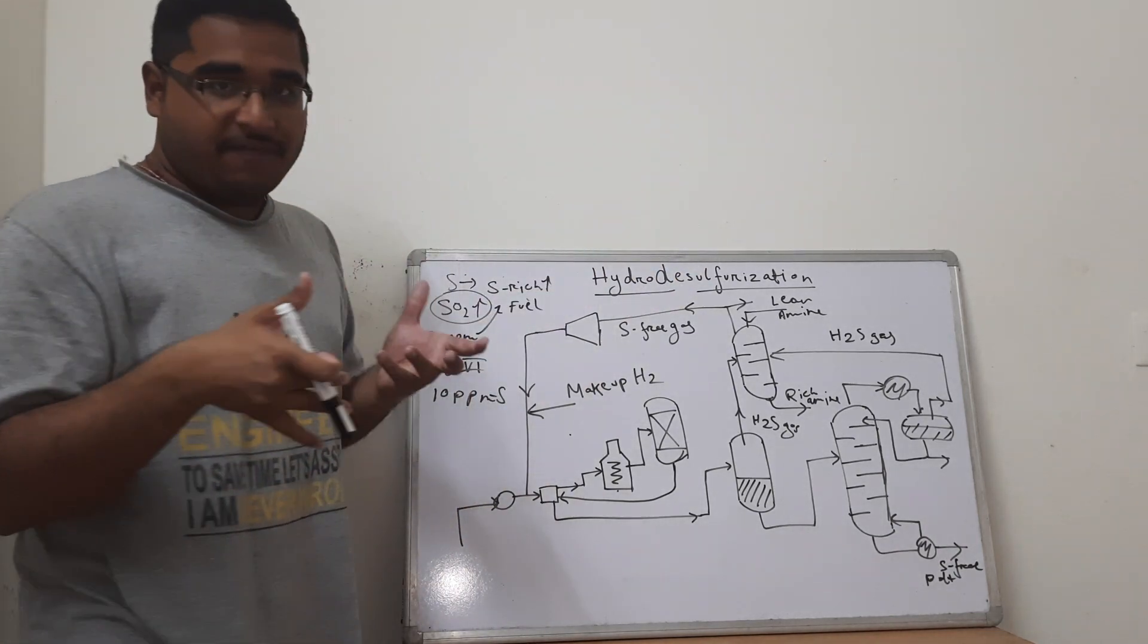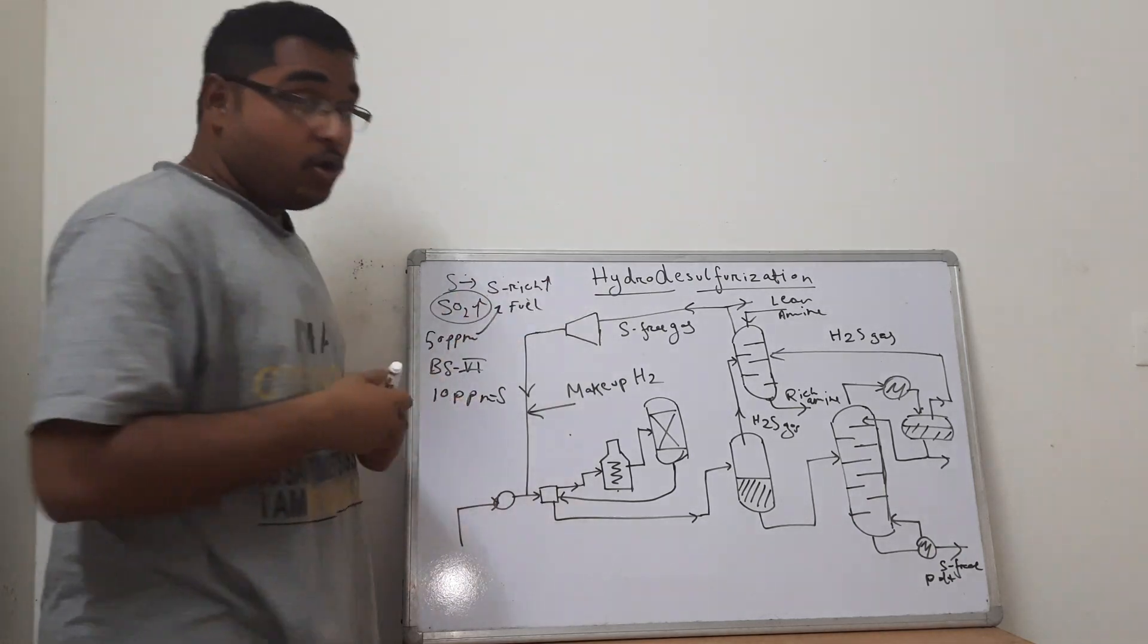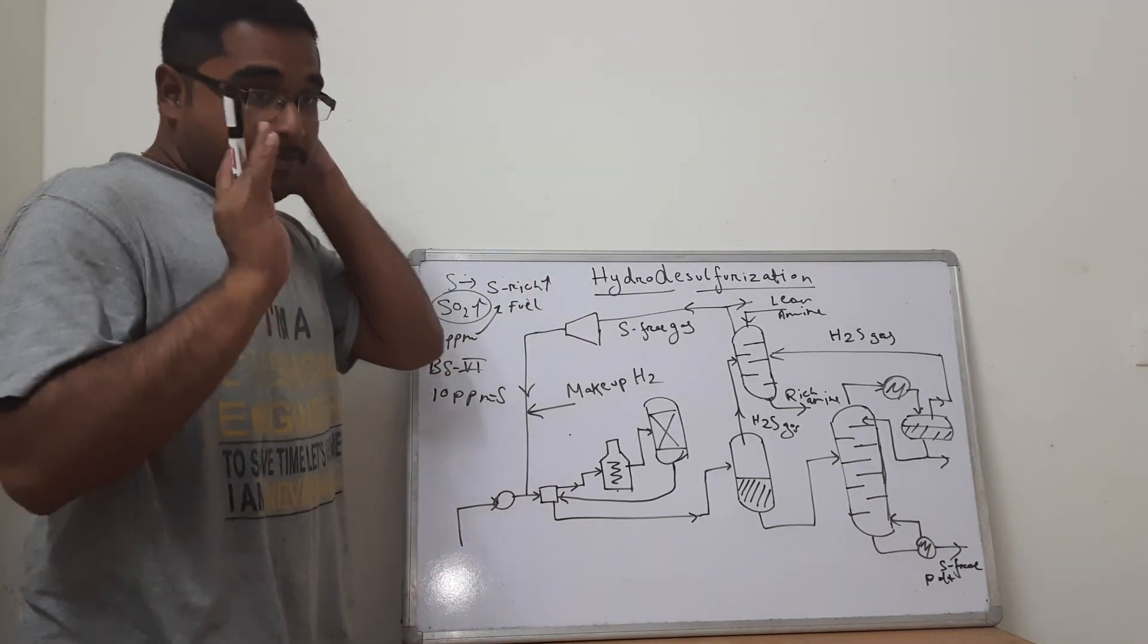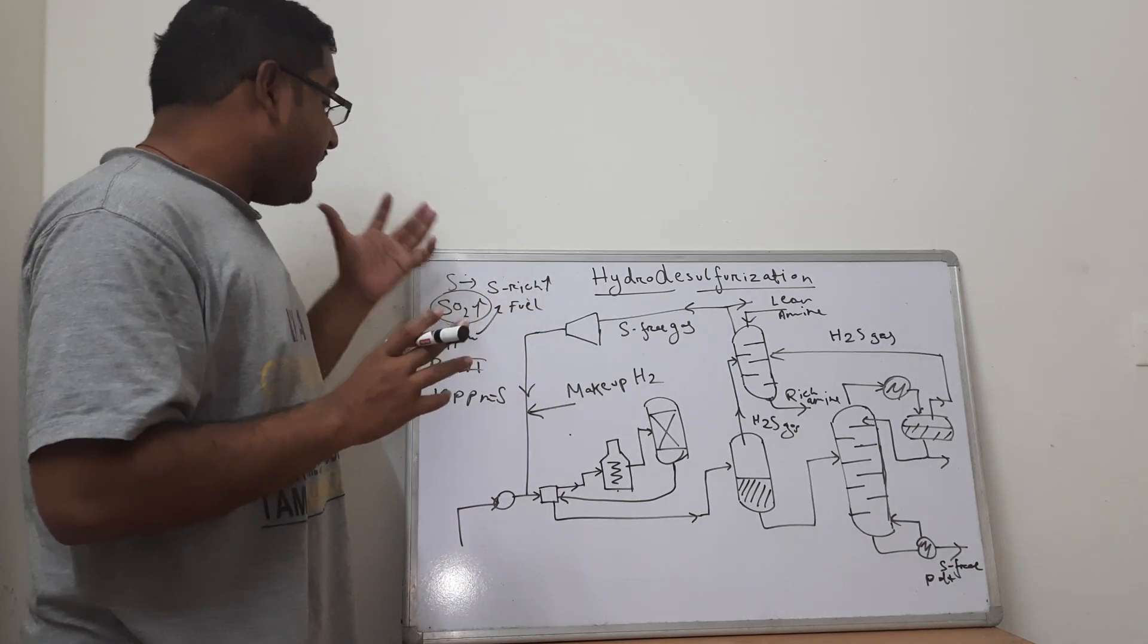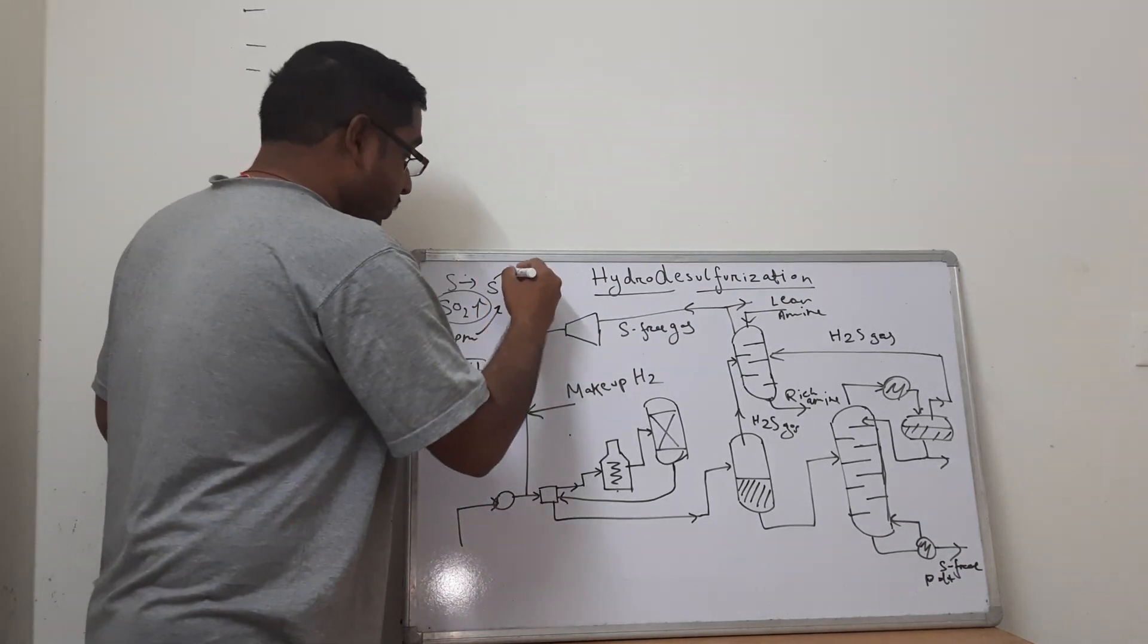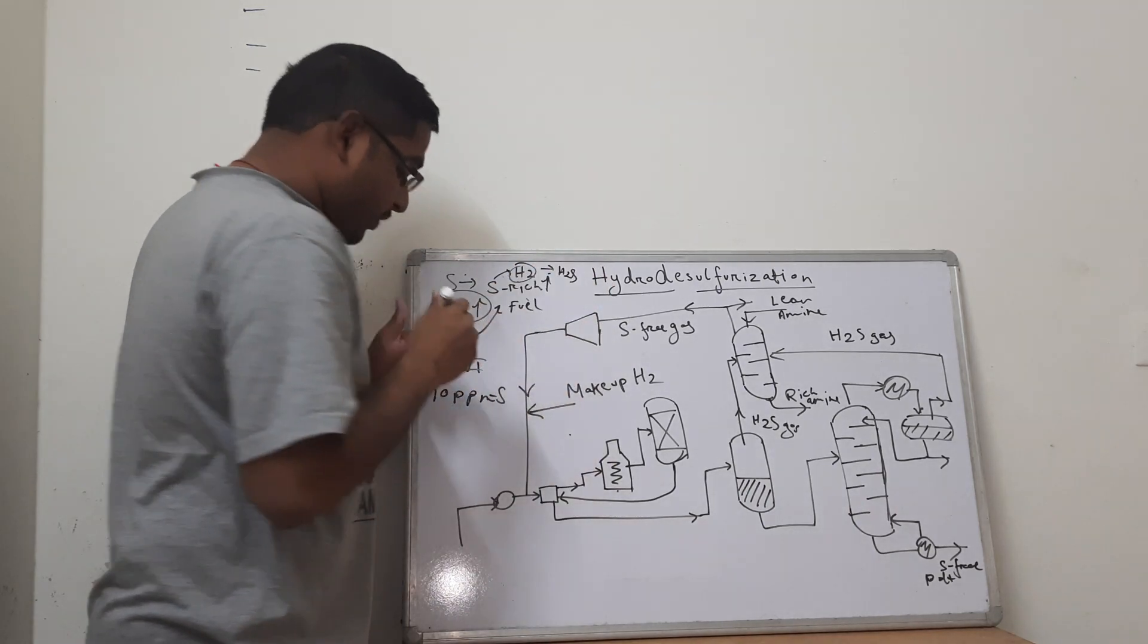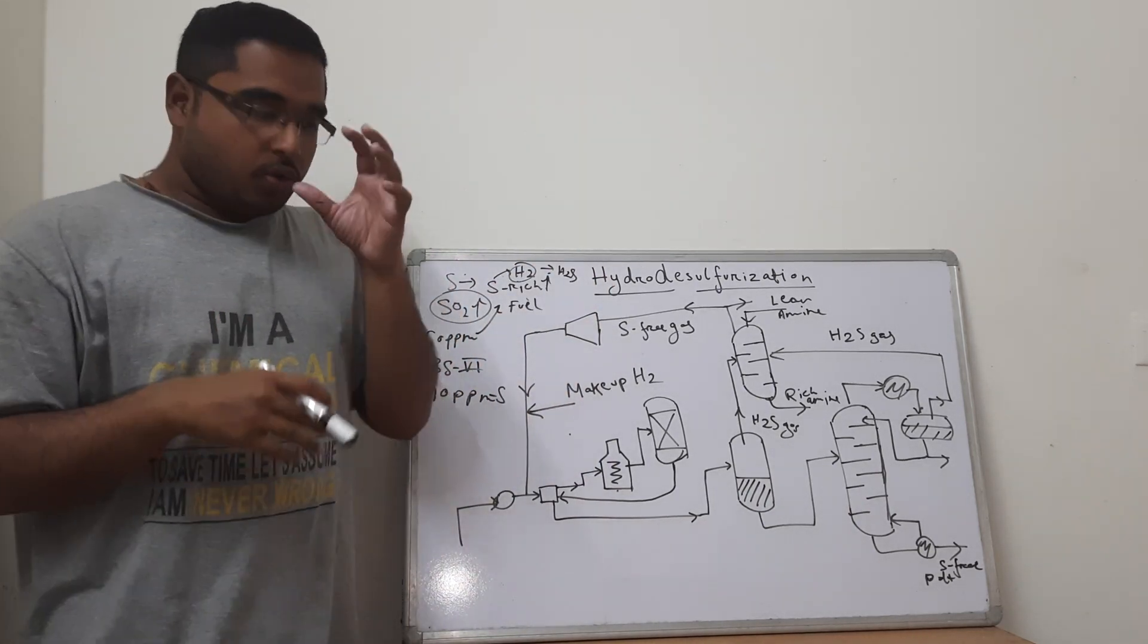One has the name of just desulfurization and why does this hydro come from? Basically, whenever we treat a sulfur-rich compound, we treat a sulfur-rich compound with hydrogen, basically H2S is being formed in the presence of a catalyst in a reactor.